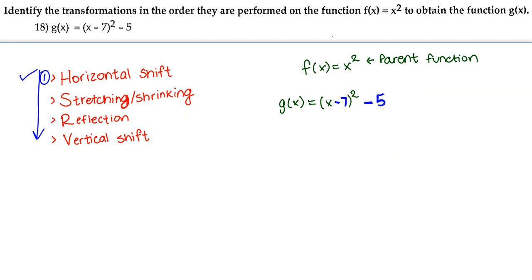Horizontal shift always goes in the opposite direction of whatever that number is. So because we have a negative 7, we're going to move to the right — or to the positive side — 7 places. Remember, horizontal shift has opposite movement.